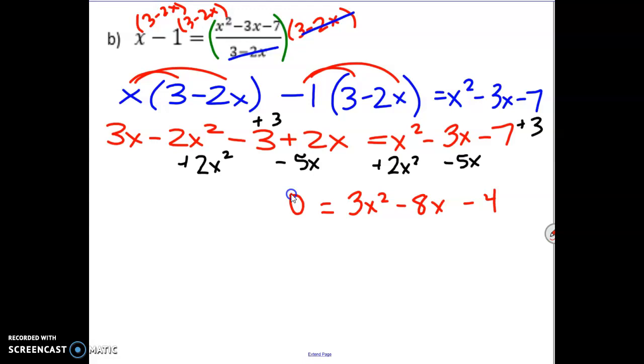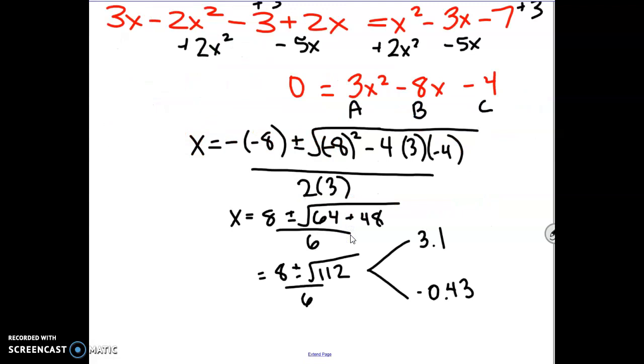Now, this quadratic can't be factored. If a quadratic can't be factored, our other option is the quadratic formula. So to review the quadratic formula, we have our A, our B, and our C. And we're going to plug that in to the formula. And then when you finish the quadratic formula, you should come up with the answers of 3.1 and negative 0.43.